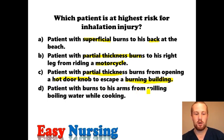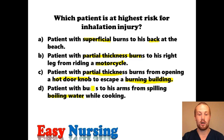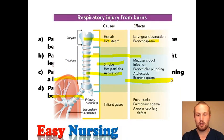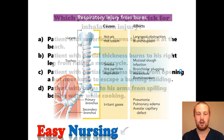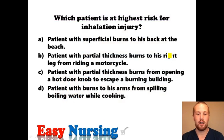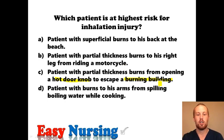And a patient with burns to his arms from spilling boiling water while cooking — that's just on the outside of the skin where it hit. Inhalation injury is damage to the lungs and the airway, which can be due to hot air, steam, smoke, aspiration, and irritant gases. Keeping that in mind, the answer that fits best is the patient inside the burning building. When you're in a closed space, gases and smoke can accumulate and he could aspirate them. So for this one, we'll pick C.